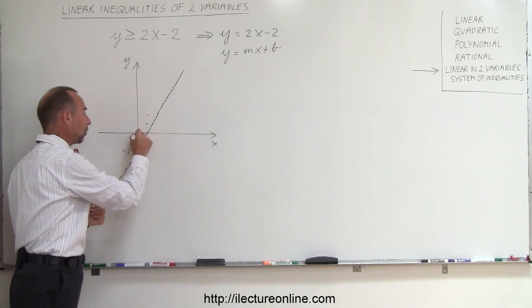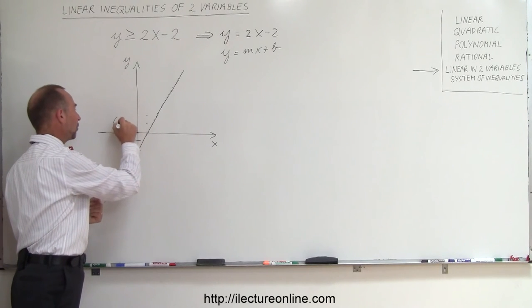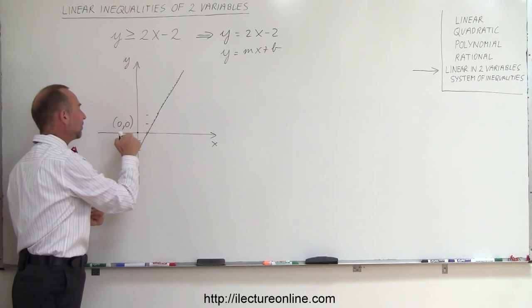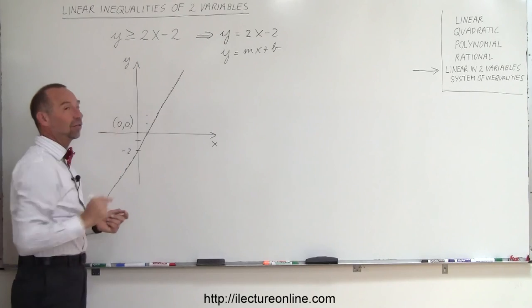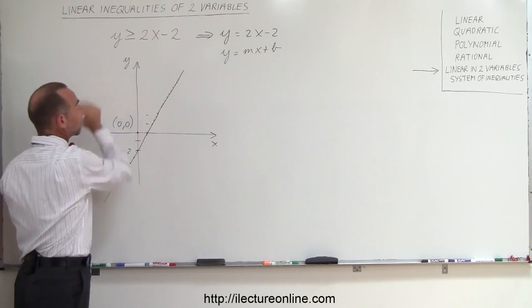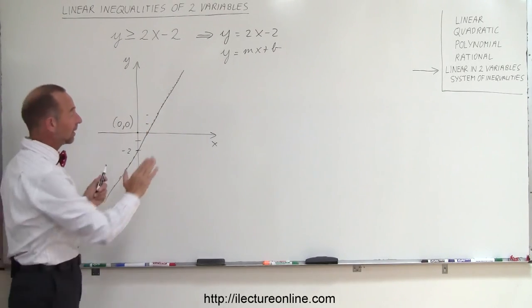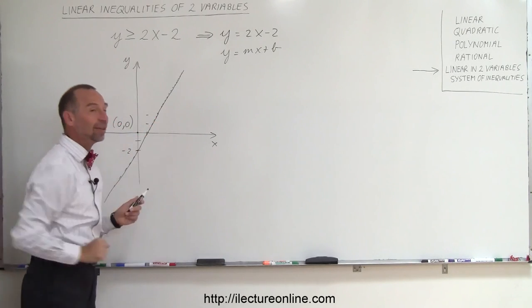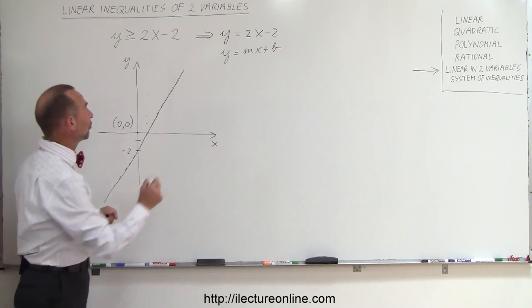If I can use (0,0), that's always a good test point. Let's use the point (0,0) and see if it satisfies the solution. If it does, then all the other points on that side satisfy the solution. If it doesn't, then all the points on the other side of the line satisfy the solution.